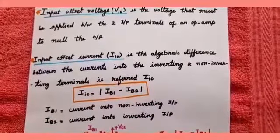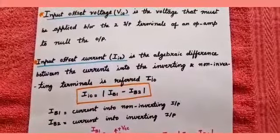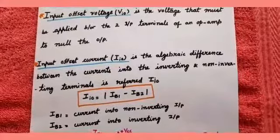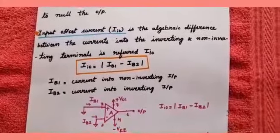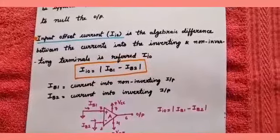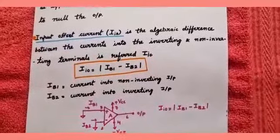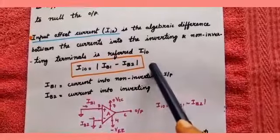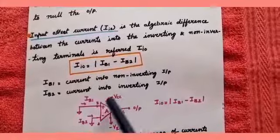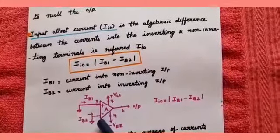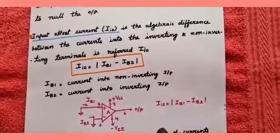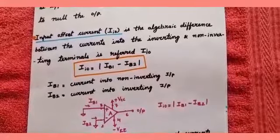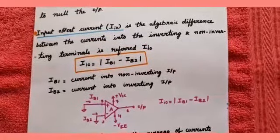The next characteristic is input offset current, Iio, which is the algebraic difference between the currents into the inverting and non-inverting terminals. It is defined as IB1 minus IB2, where IB1 is the current into the non-inverting input and IB2 is the current into the inverting input.